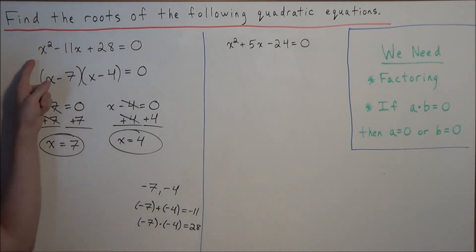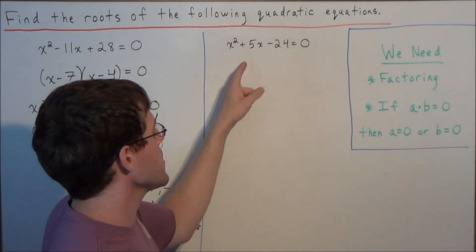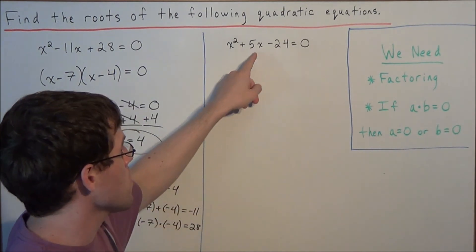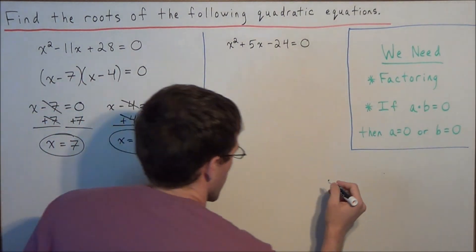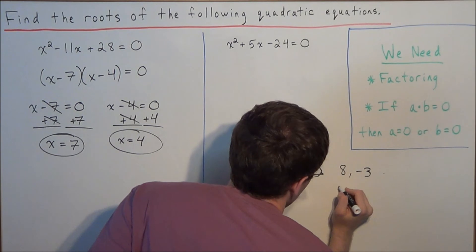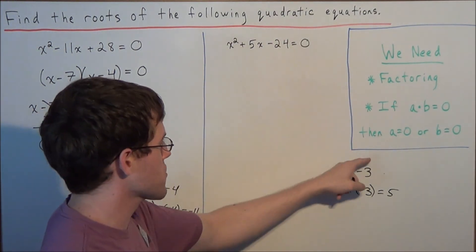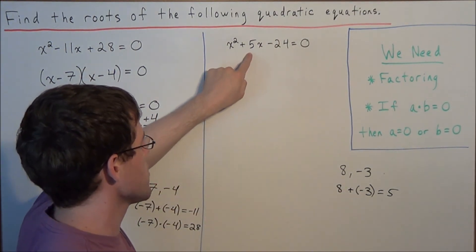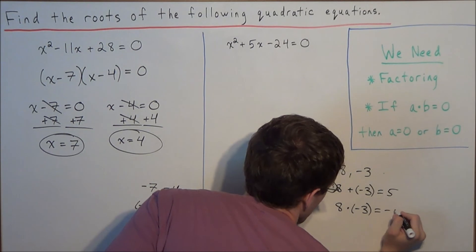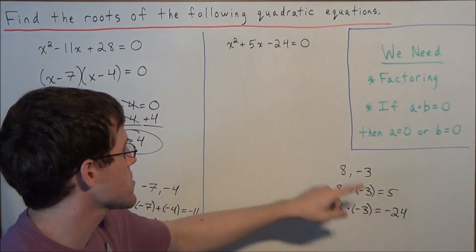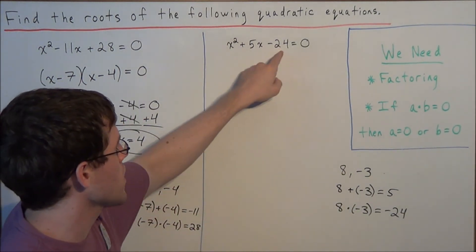So the two solutions to the first problem are x equals 7 and x equals 4. These two x values satisfy the equation x squared minus 11x plus 28 equals zero. Now we're going to do the same thing for the second problem. We need to find two numbers that sum to a positive 5 and multiply to a negative 24. After some thought, we'll arrive at 8 and negative 3, because 8 plus negative 3 equals positive 5, and 8 times negative 3 equals negative 24, which matches the last term.